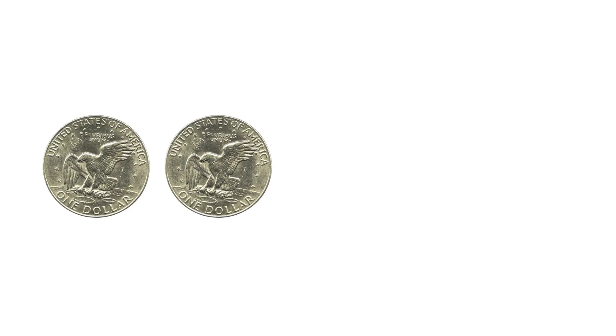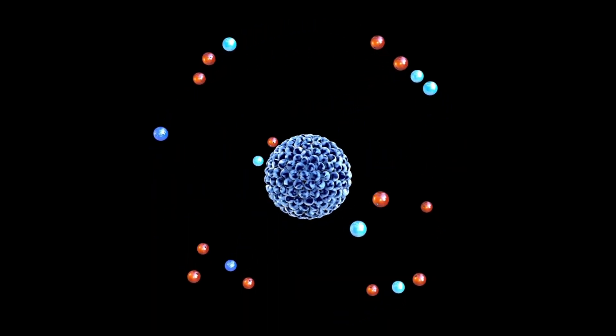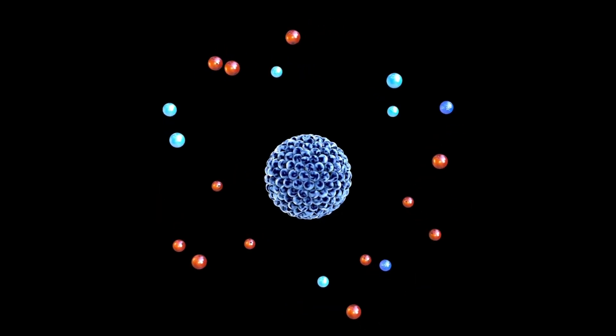Think of quanta like coins. You can have one coin, two coins, but not 1.5 coins. In the same way, electrons can only exist in certain energy levels, like they're on specific floors of a building, not in between.